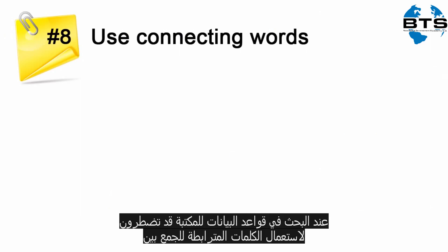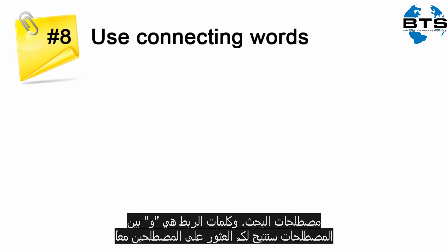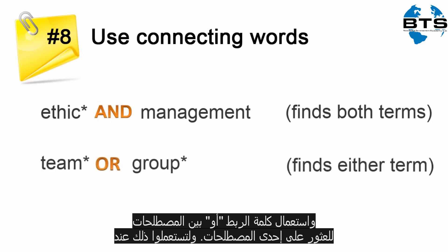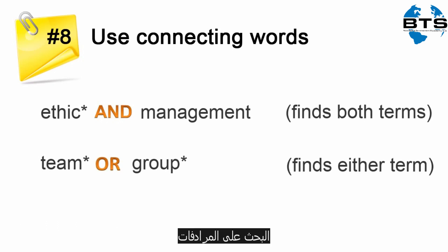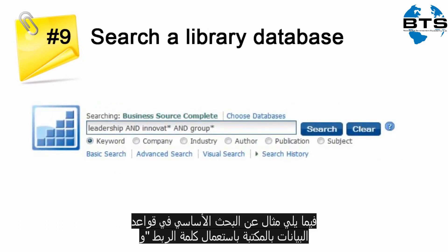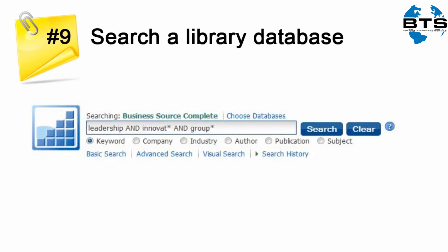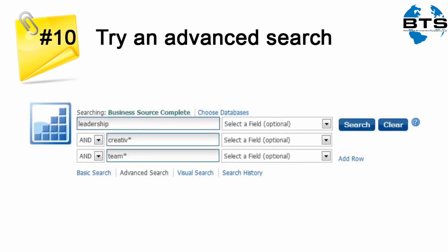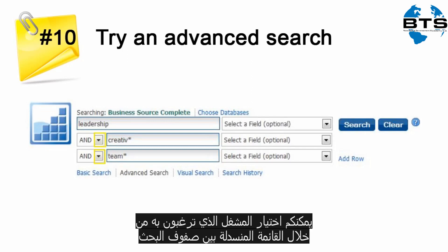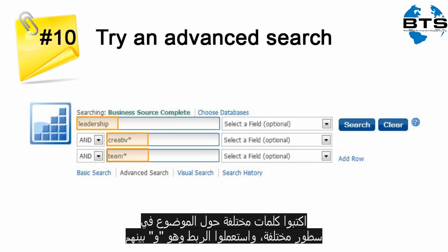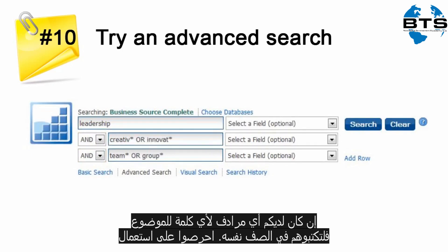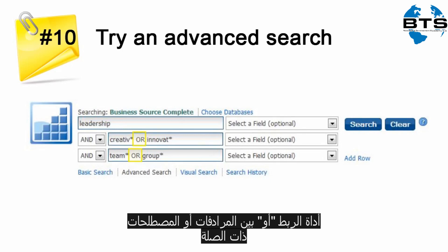When you search a library database, you may need to use connecting words to combine your search terms. The connecting word AND between your terms will find both terms. Use the connector OR between your terms to find either term — use this when searching with synonyms. Here's an example of an advanced search form where you can select the operator from the drop-down box between each search row. Put different topic words on different lines using the connector AND. If you have synonyms for any topic words, put them in the same row and use the OR connector between them.